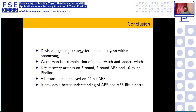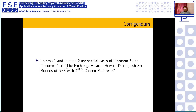In conclusion, we devised a generic strategy embedding the YOYO attack within the Boomerang attack, showed how the word-swap operation can be visualized as a combination of S-box switch and ladder switch, and successfully mounted attacks on five-round and six-round AES and ten-round Falcos. The attacks on AES were verified by implementing them on the mini 64-bit AES version. We expect our attacks to provide better understanding of AES and AES-like ciphers. Note: in our paper we inadvertently omitted citations for Lemma 1 and Lemma 2, which are special cases of Theorem 5 and Theorem 6 of the exchange attack paper by Sondre Ronjom and Bardek, published at SACRIP 2019.